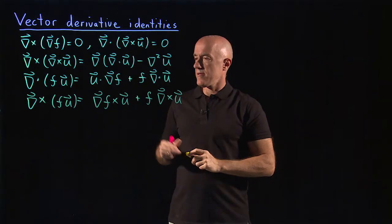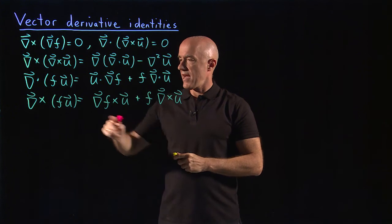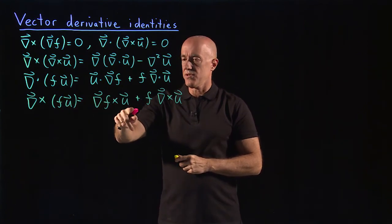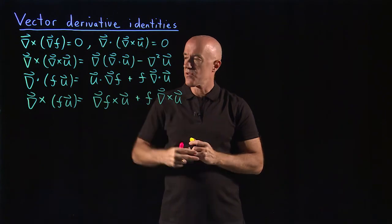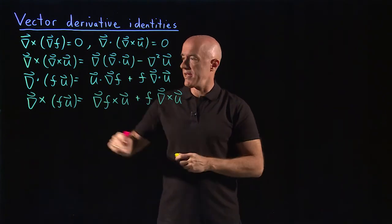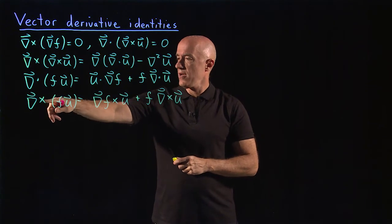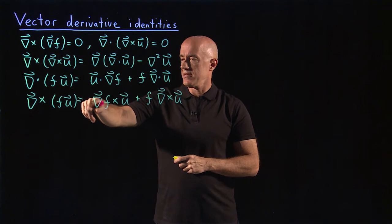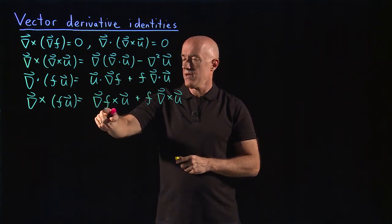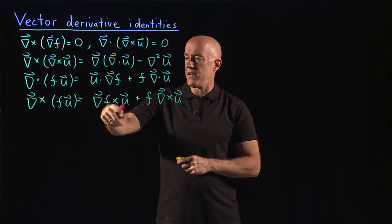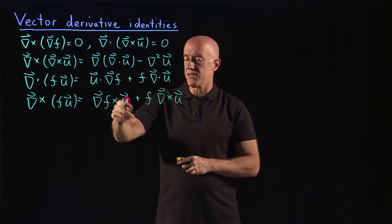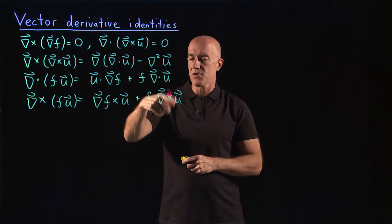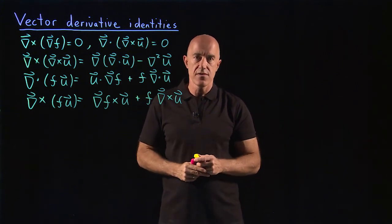The fourth vector identity is del cross fu equals del f cross u plus f del cross u. The curl of a scalar field times the vector field is equal to the cross product of the gradient of the scalar field with the vector field, plus the product of the scalar field times the curl of the vector field.